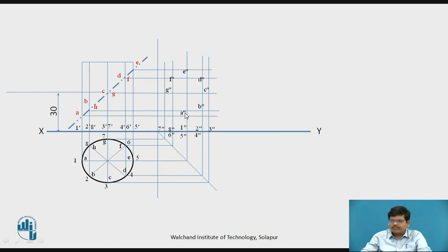Similarly point B lies on 2 and 8, so the projector from 2 has B and the projector from 8 has B. Similarly we have obtained all the points A, B, C, D, E, F and G. So this represents the sectional view. This is the cut section of your cylinder. We draw hatching lines into it.